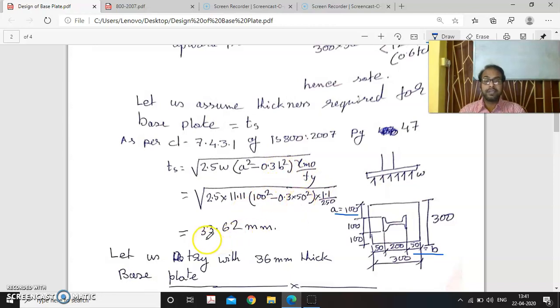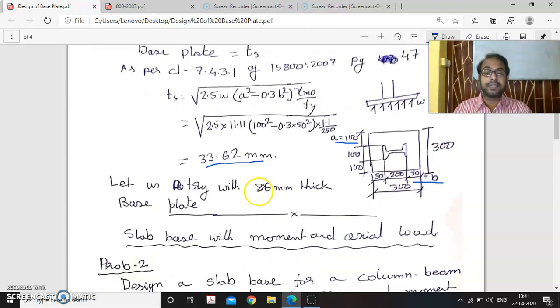After putting these values in the formula, we got the required thickness of the base plate. It is coming as 33.62. We have provided 36 millimeter base plate, so hence it is okay. After this, the axially loaded column base plate is completed.